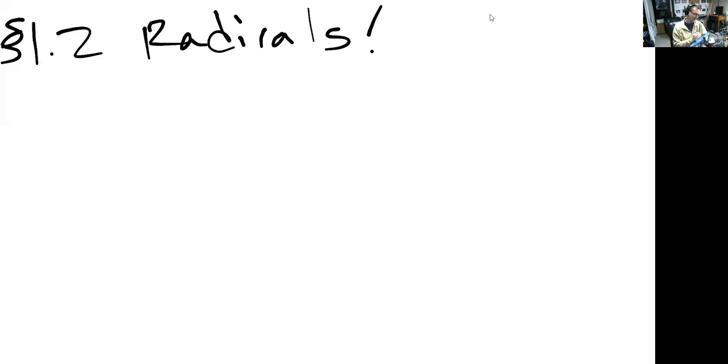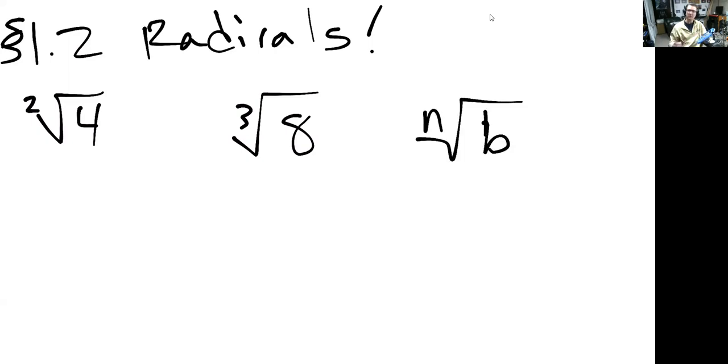When I write something like the square root of four, or the third root of eight, I'm really just talking about these exponentials here. We usually don't write it, but there's a two here. We see the three on the other one. No matter what that is, some nth root of some number b, all of these things have an equivalent form as an exponential.